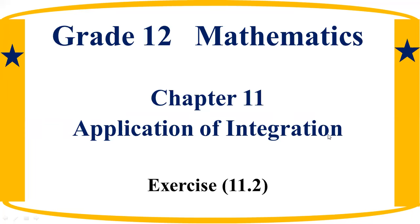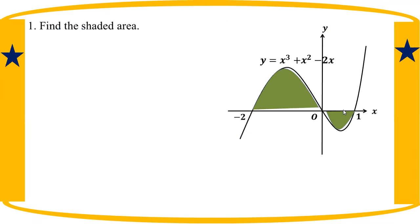Hello, my name is SSA 11.2, number one. Find the shaded area — the area between the curve and the x-axis. This is the same setup.